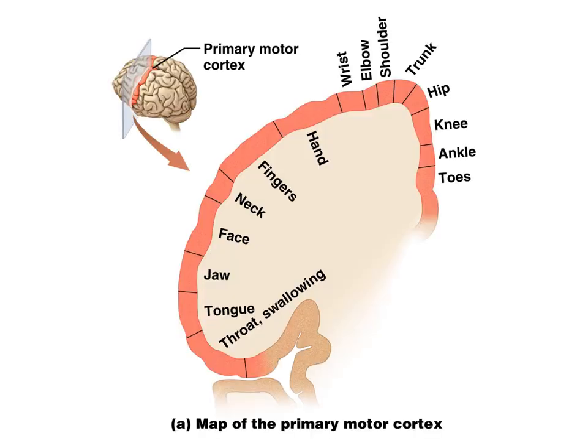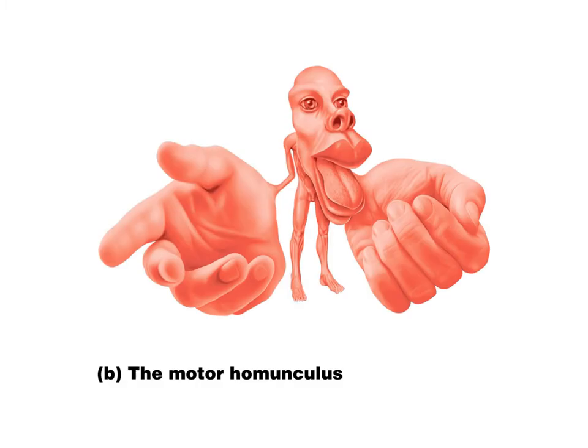Just as we have a primary somatosensory cortex, we can look at the primary motor cortex, which has also been mapped. Certain regions — like the jaw, tongue, fingers, and hands — have much more cortical contribution than those of the limbs. We can also illustrate this with the motor homunculus, where the little man is in proportion to the motor innervation. It looks very similar to the sensory homunculus, with head, lips, tongue, hands, and fingers exaggerated, reflecting our much greater dexterity in these areas.